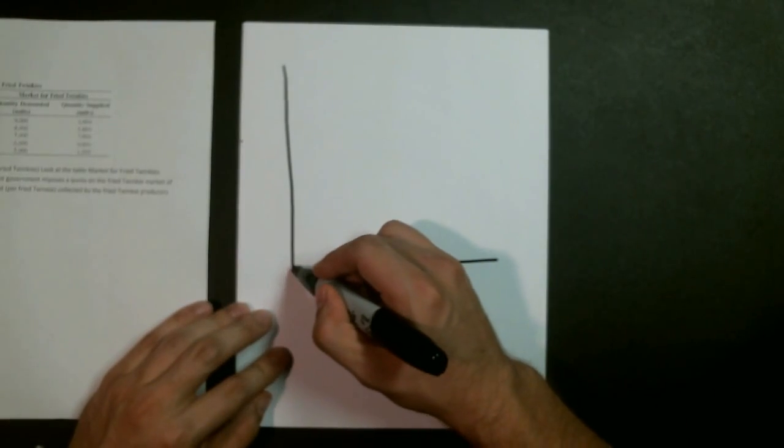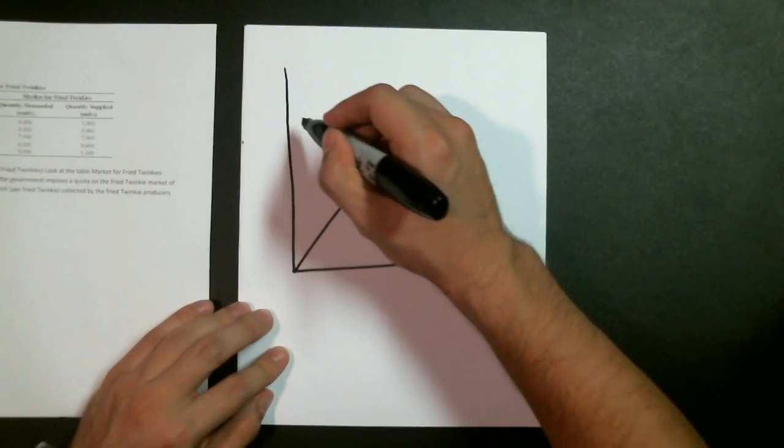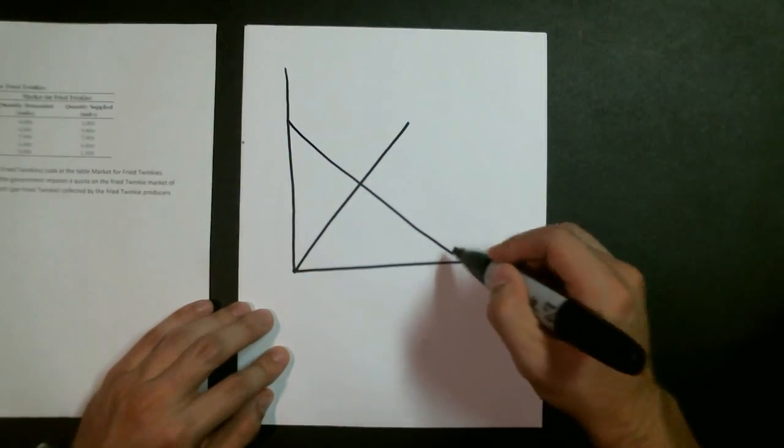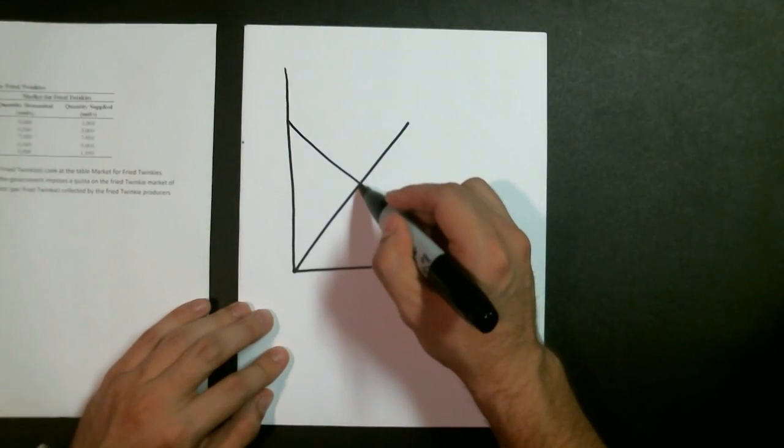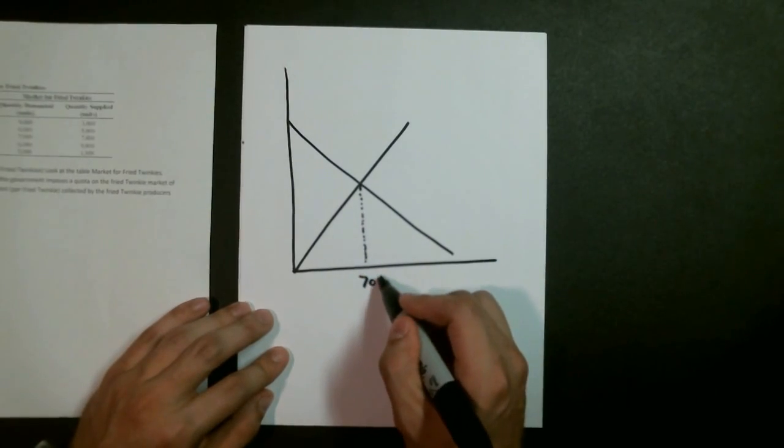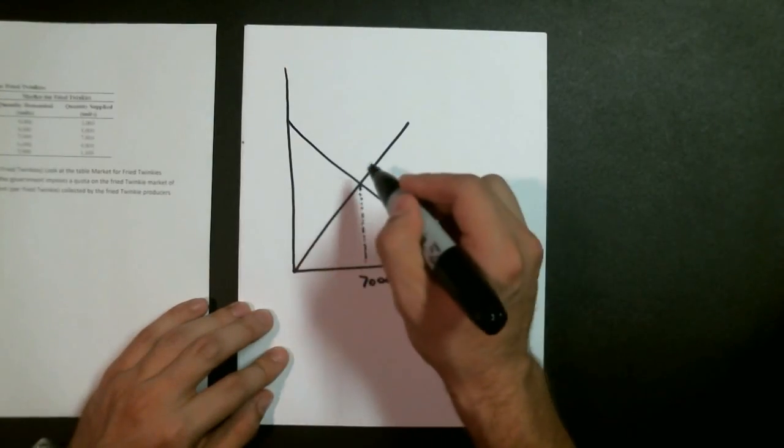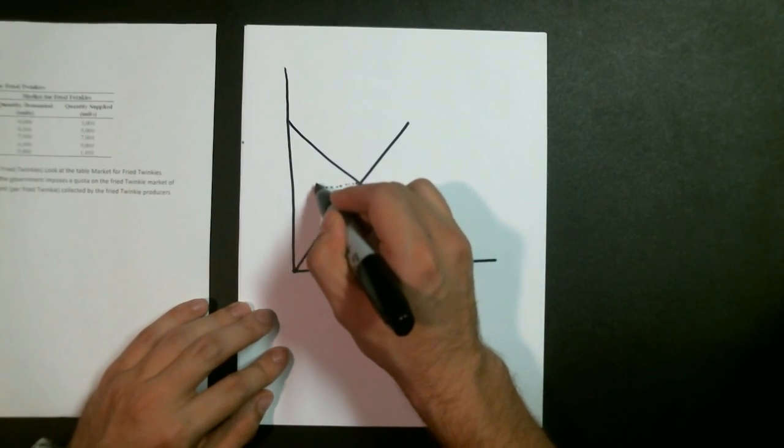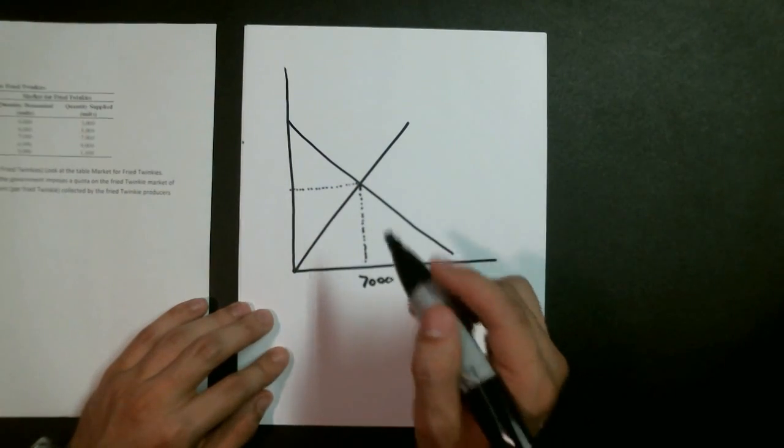So say this is our hypothetical market for Twinkies. Here we are operating at equilibrium. We have 7,000 being produced at a price level of $1.30.